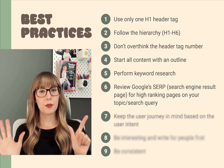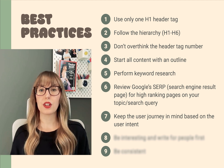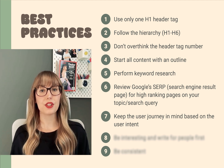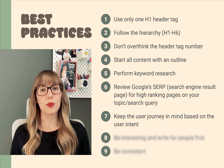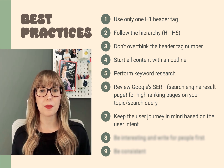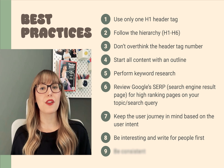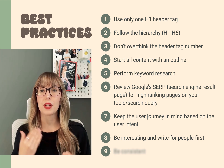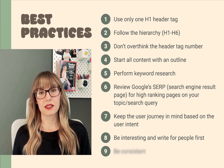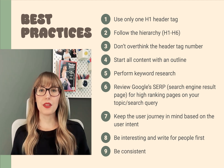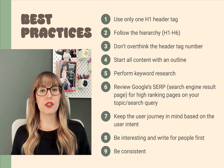Number seven: keep the user journey in mind. Based on user intent, consider what action you want users to take and what information will help them take that next step — let these insights shape your content to align with user intent. Number eight: be interesting and write for people first. You want your keyword in a heading, but incorporate it in a way that speaks to your audience first. Number nine: be consistent — whether you use sentence case or title case, follow suit across all of your header tags. I hope you've finally figured out header tags, heading hierarchy, why it's important, and why you need to implement it on your site. Subscribe for more SEO tips and I'll see you next time.